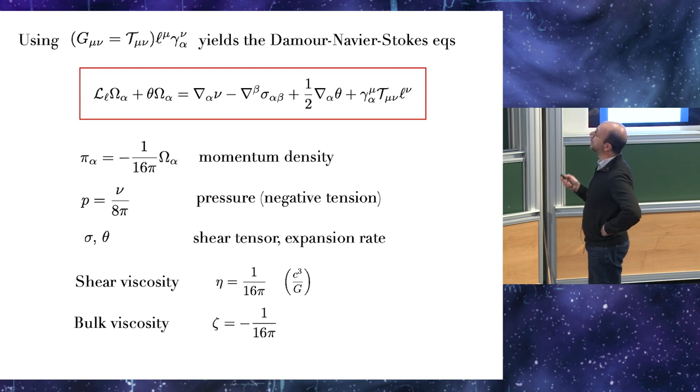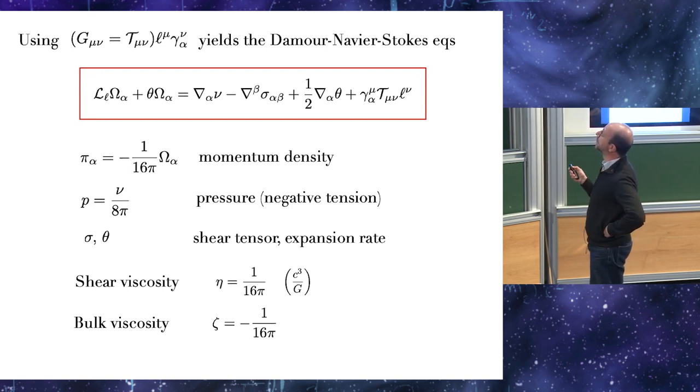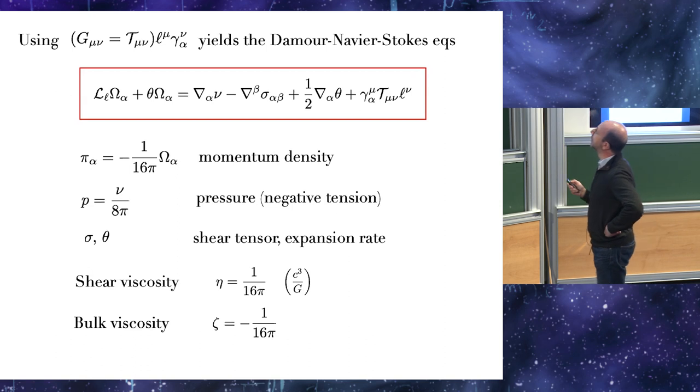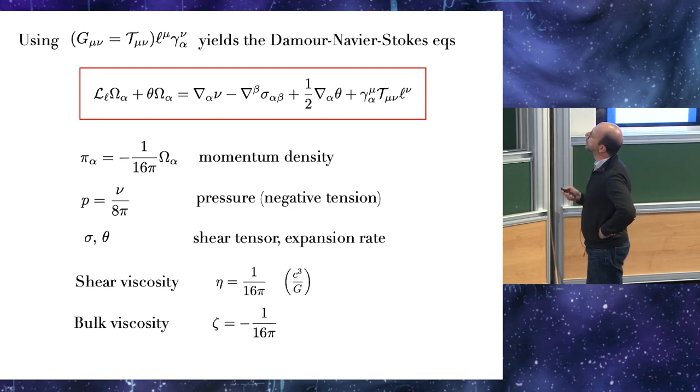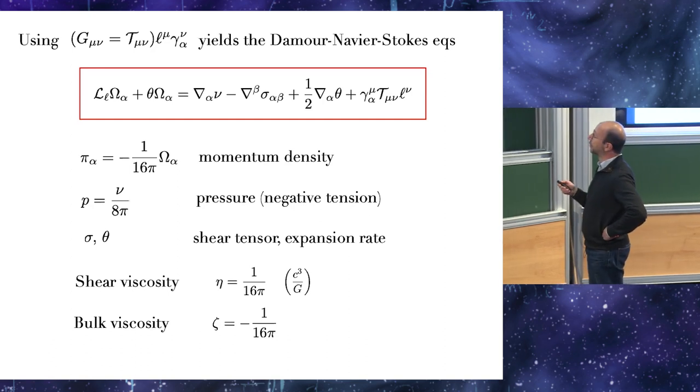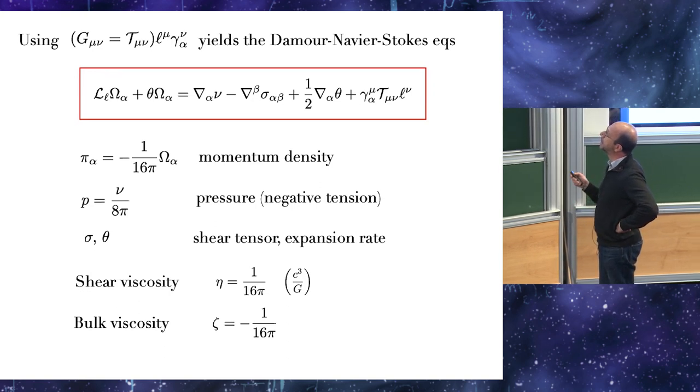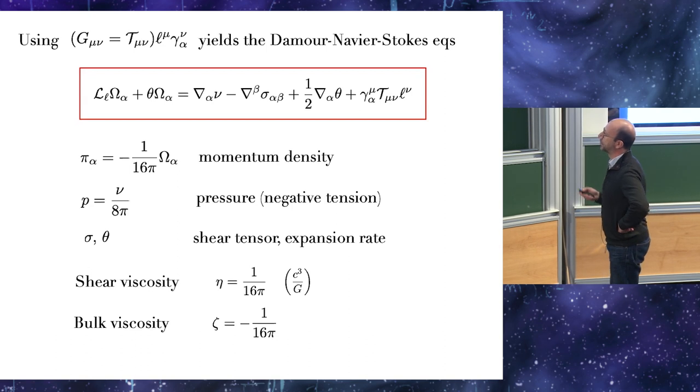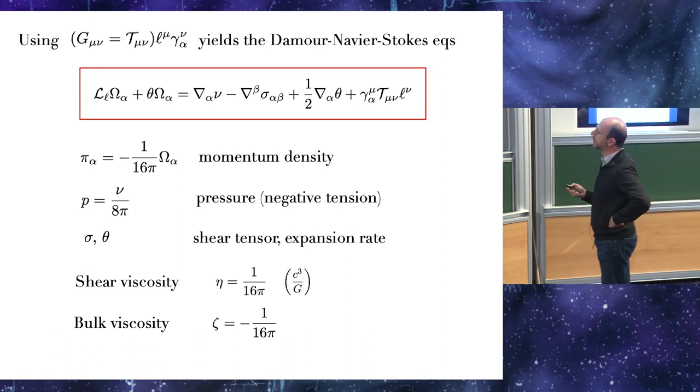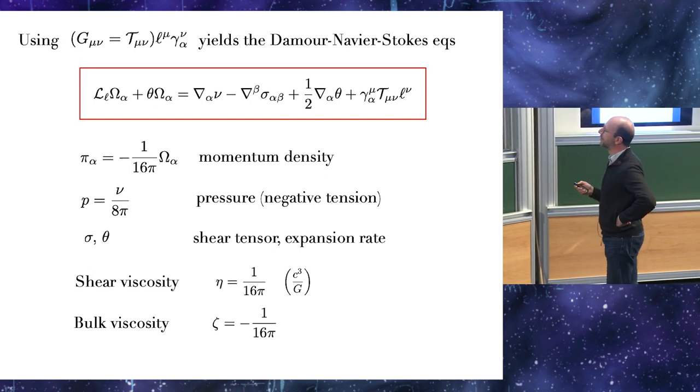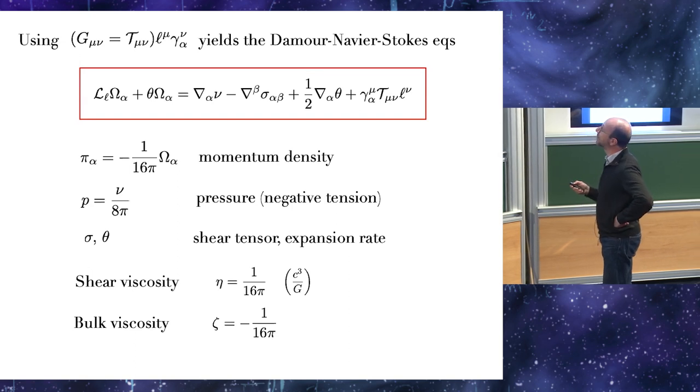And then the discovery of Thibaut was that when you project the Einstein equations in this component along the null vector and along the surface, this gives some equations which have been dubbed the Damour-Navier-Stokes, because they have the same form as the Navier-Stokes equation. They become precisely these equations when you reinterpret these geometric quantities appropriately. So omega alpha becomes the momentum density, nu the inaffinity parameter is interpreted as the pressure, and sigma and theta are interpreted as the shear tensor and the expansion rate. And with this, these are exactly the Navier-Stokes equation with some forcing term from the bulk stress energy tensor.